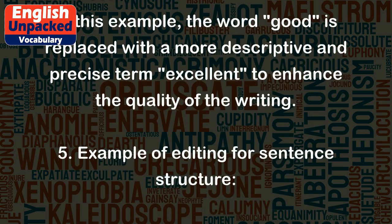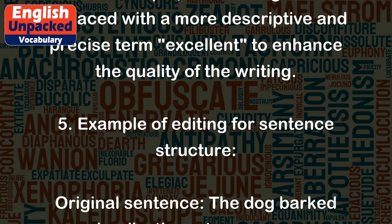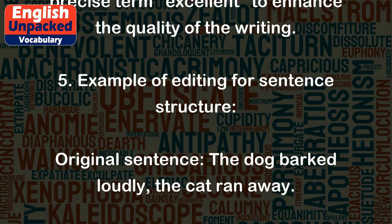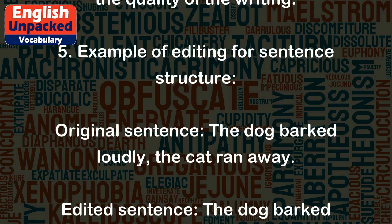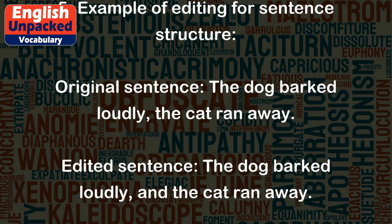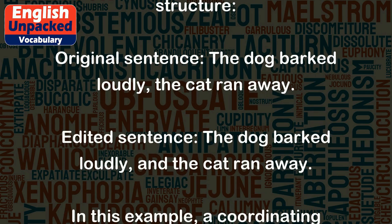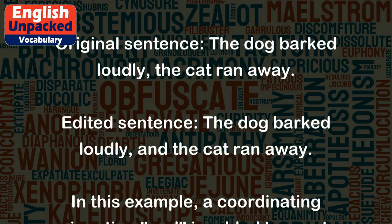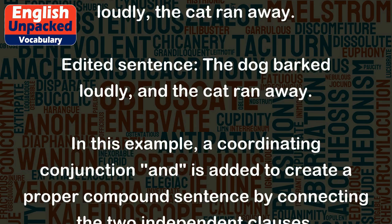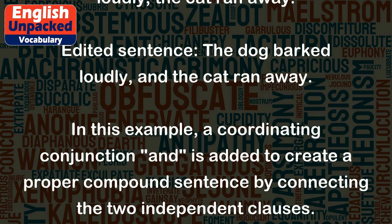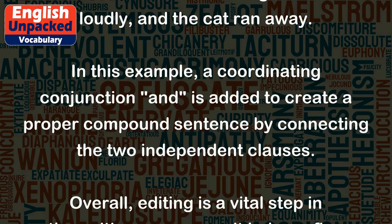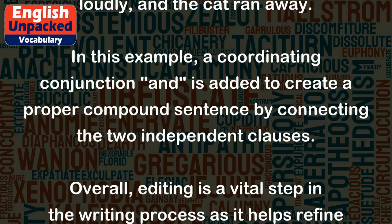Example 5: Editing for sentence structure. Original sentence: "The dog barked loudly, the cat ran away." Edited sentence: "The dog barked loudly, and the cat ran away." In this example, a coordinating conjunction "and" is added to create a proper compound sentence by connecting the two independent clauses.